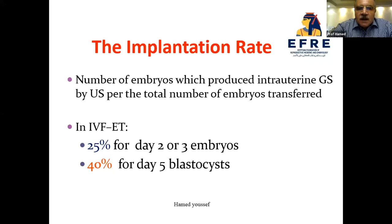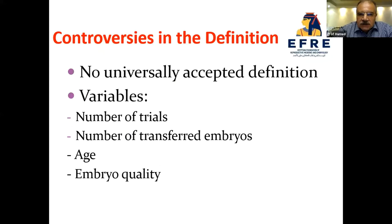The implantation rate is the number of embryos which produce an intrauterine gestational sac divided by the total number of embryos transferred in IVF. It is about 25 percent for day two or three embryos, and about 40 percent for blastocysts. Regarding the controversies in the definition, nowadays there is no universally accepted definition for RIF.